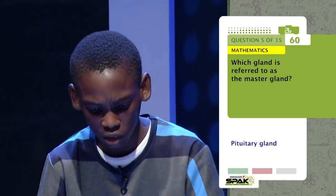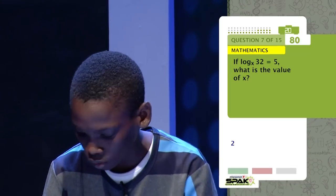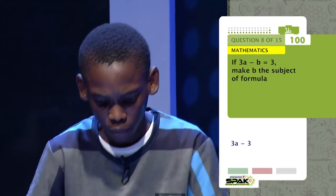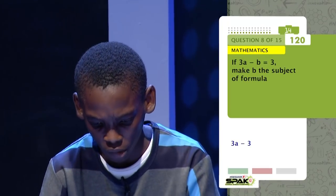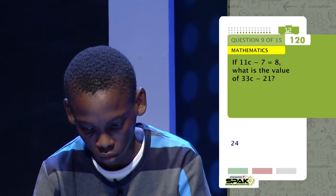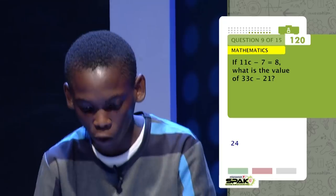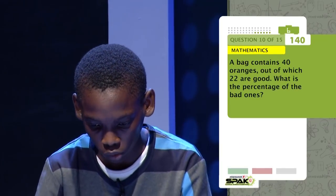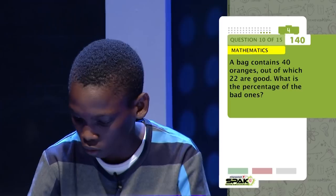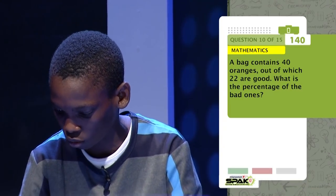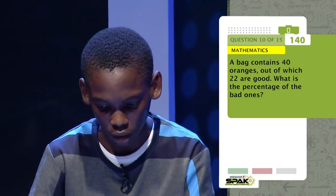Which gland is referred to as the master gland? What part of the plant is adapted to catch pollen? Pass. If log 32 base x equals 2. If 3A minus B equals 3, make B the subject — B equals 3A minus 3. If 11C minus 7 equals 8, what is the value of 33C minus 21? 24. A bag contains 40 oranges, out of which 2 are good. What is the percentage of the bad ones? Five.